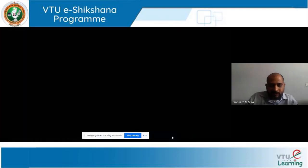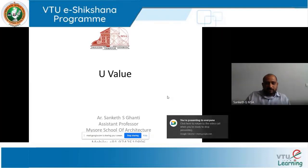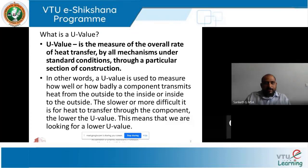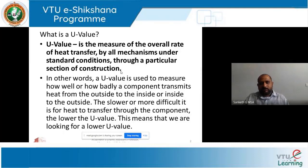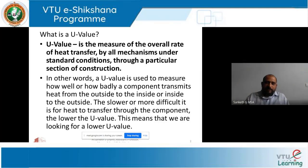U-value — please pay attention, this is a very important topic because you can do exercises based on this. I will just read out the definition: U-value is the measure of overall heat transfer by the mechanism under standard conditions through a particular section of construction. It can be a wall, it can be a roof — a particular section of construction. It is a measure of overall heat transfer, or it is a conductance value. The heat flowing from outside to inside or inside to outside through a material can be expressed by U-value.